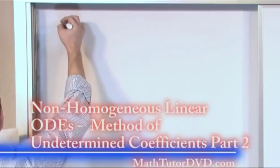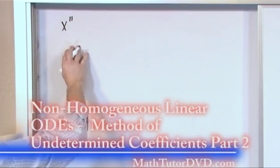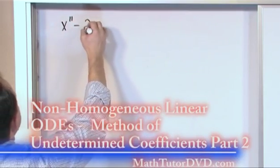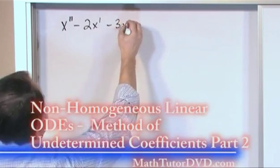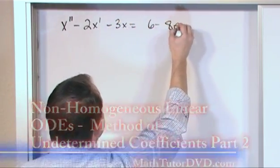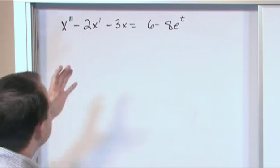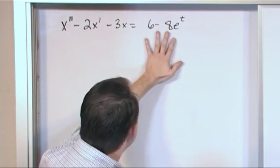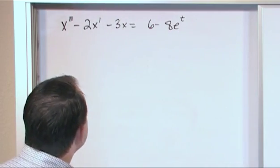Our first real problem is x double prime minus 2 times x prime minus 3x equals 6 minus 8e to the t. You haven't seen anything like this so far because this is a non-homogeneous equation. You look at it and say the right-hand side is not 0. Until now they've all been 0, so it's non-homogeneous.